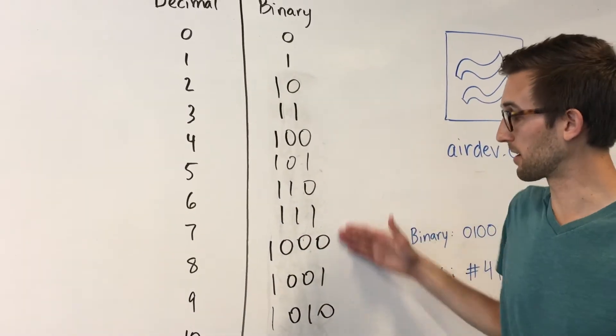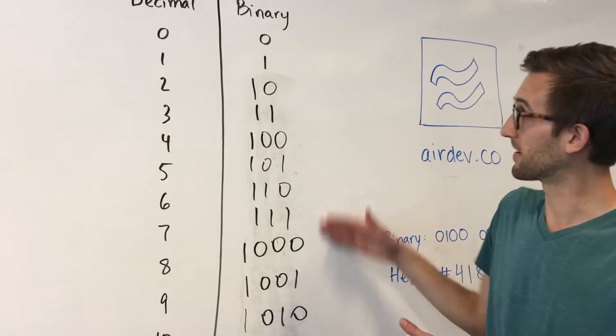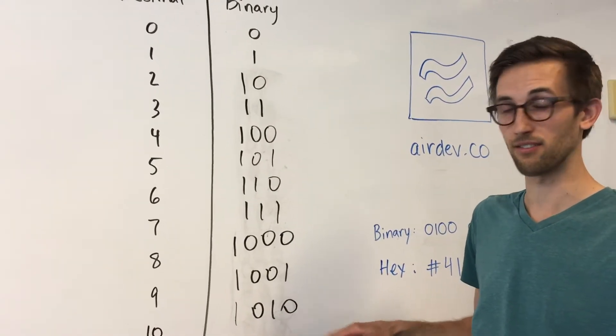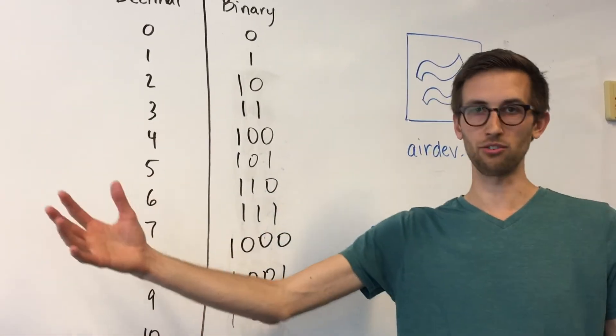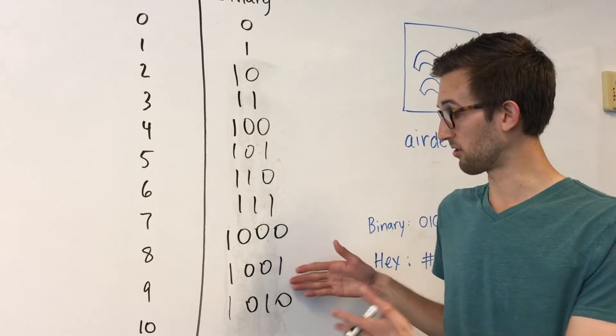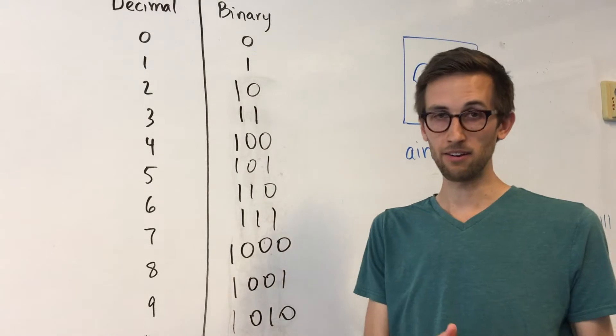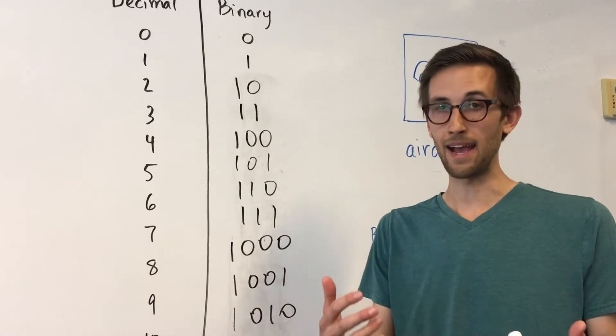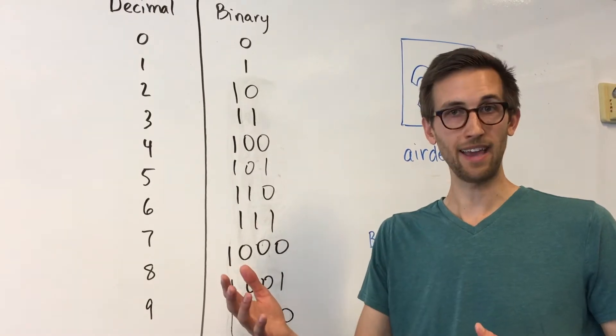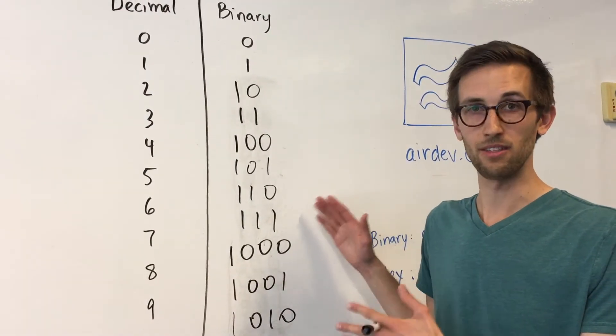So everything in a computer is expressed in these zeros and ones. And as you can tell in just counting to the number ten you already are dealing with four different digits. So the digits can be very long. You get these very long strings of ones and zeros. But the computer knows how to turn these ones and zeros into everything. From numbers to letters, symbols, commands like turn on your computer, boot up Gmail, show that cat video. Everything boils down to these ones and zeros.